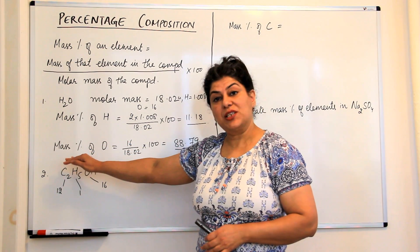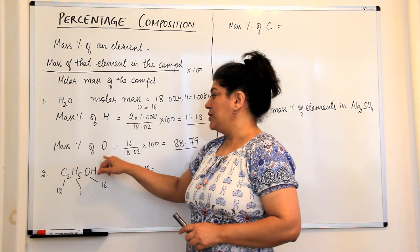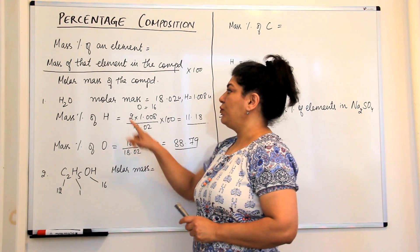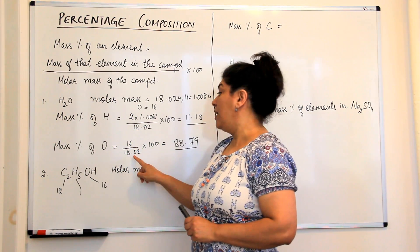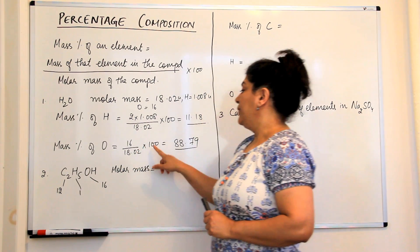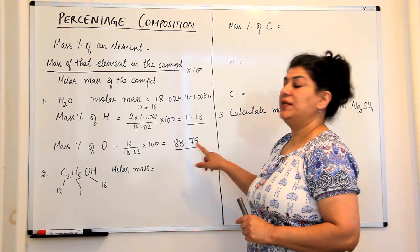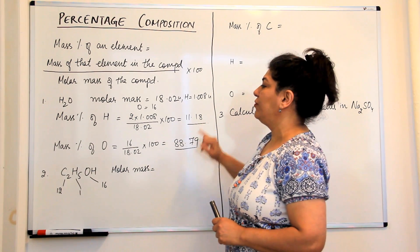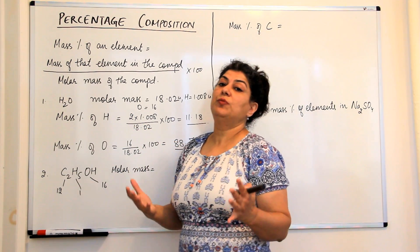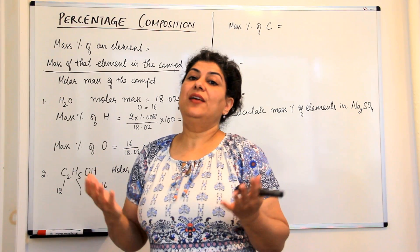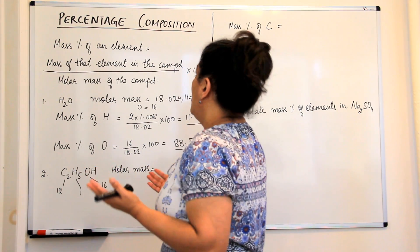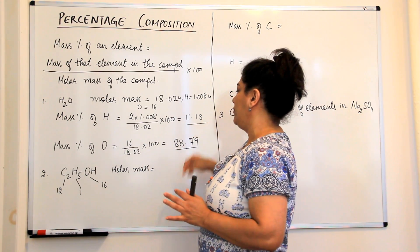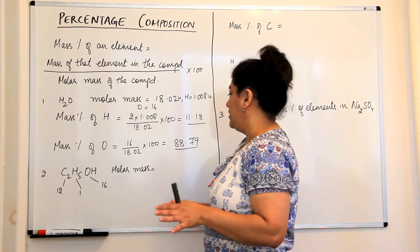Similarly, the mass percentage of oxygen is the mass of oxygen divided by the molar mass, multiplied by 100: 16 ÷ 18.02 × 100 = 88.79%. So the percent composition of water is hydrogen 11.18% and oxygen 88.79%.